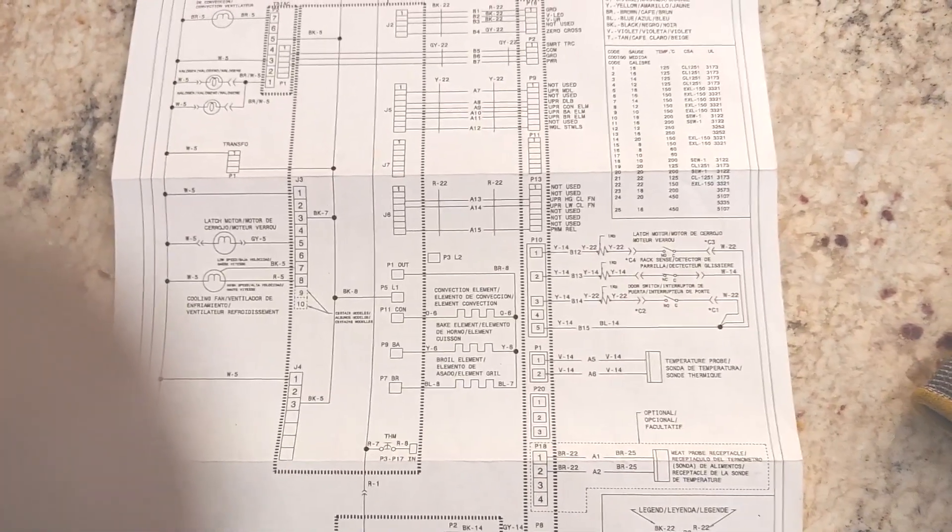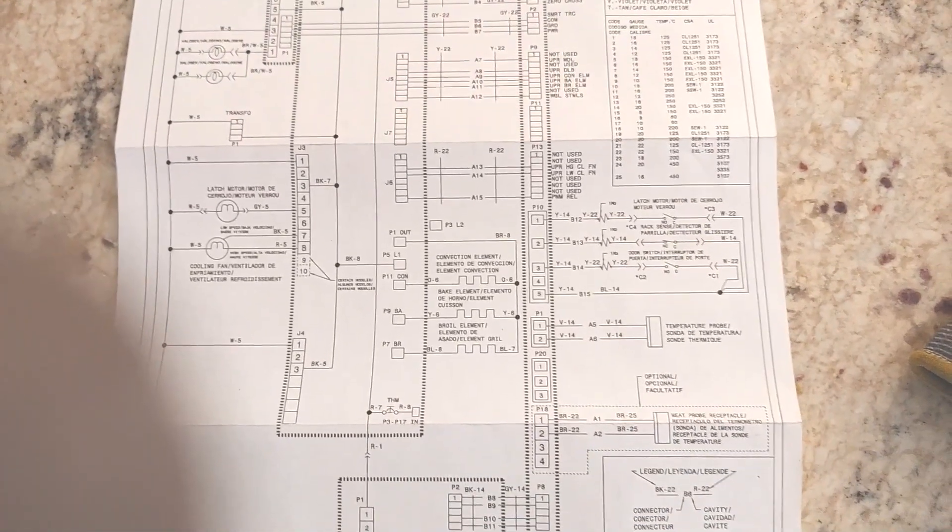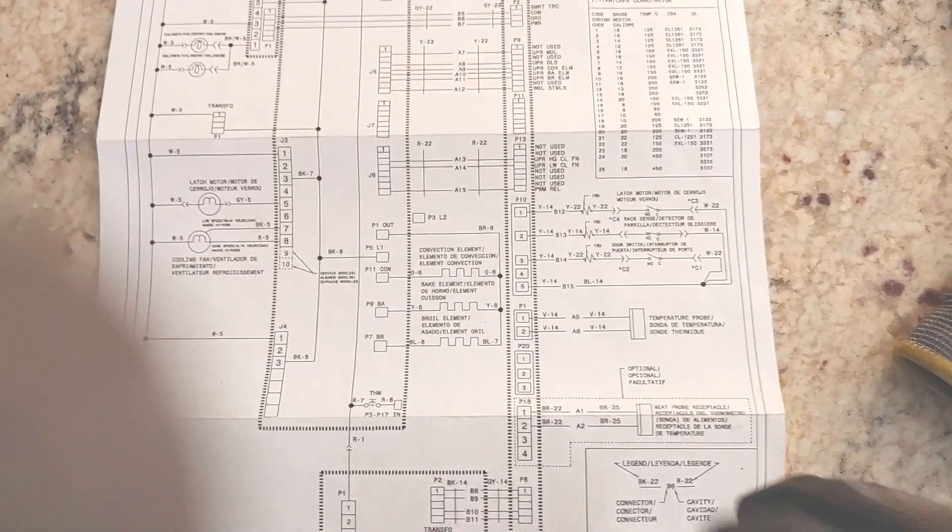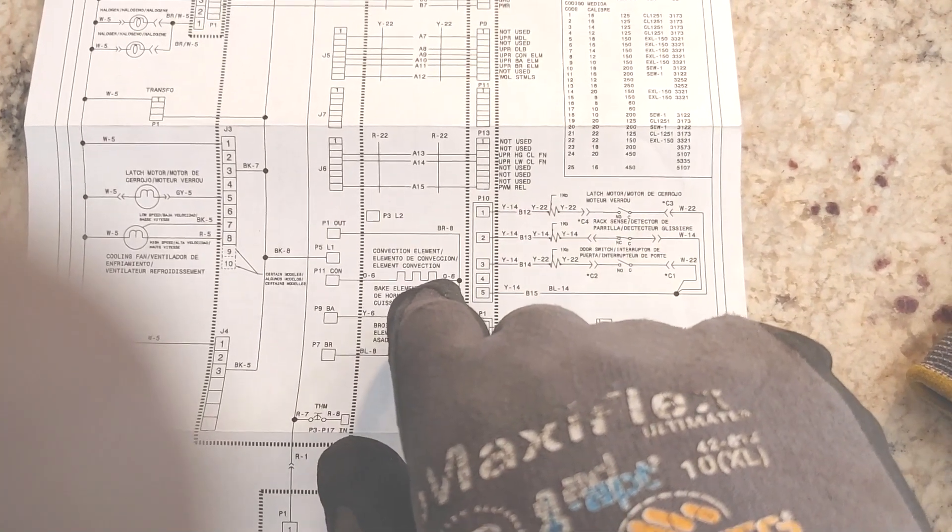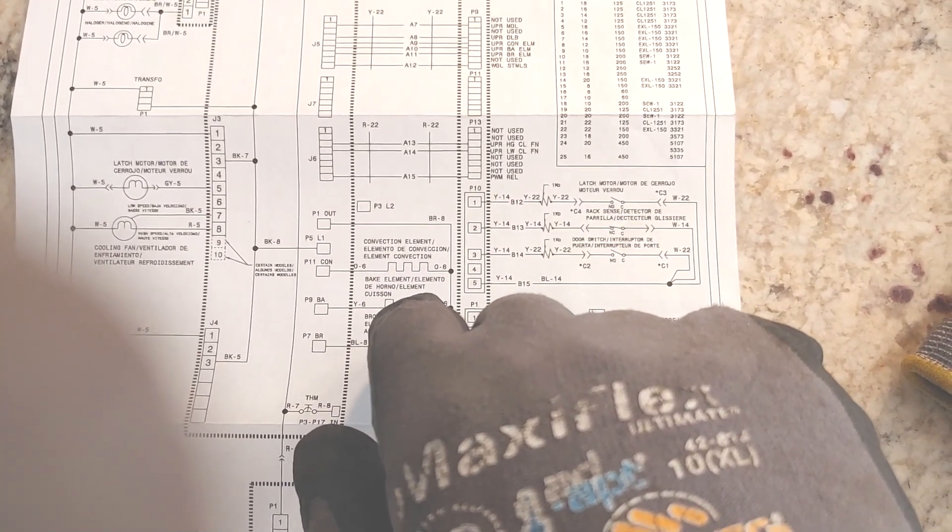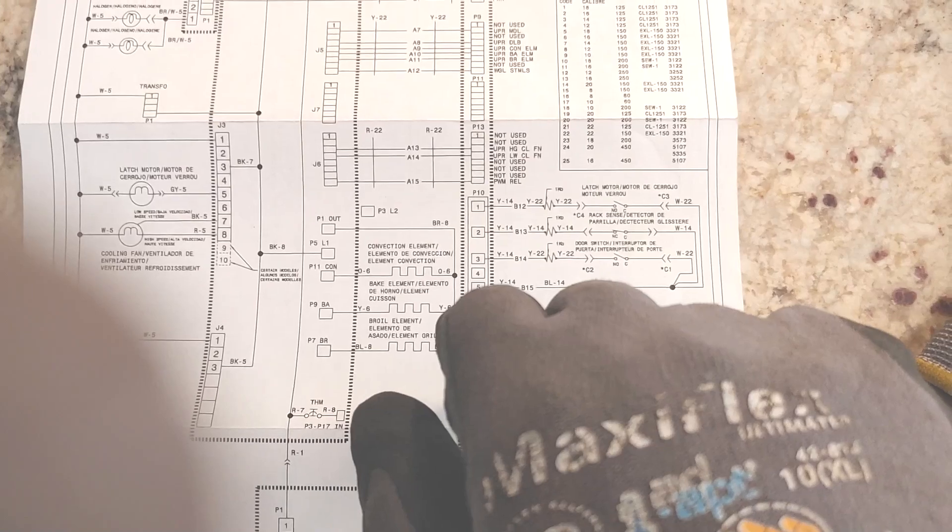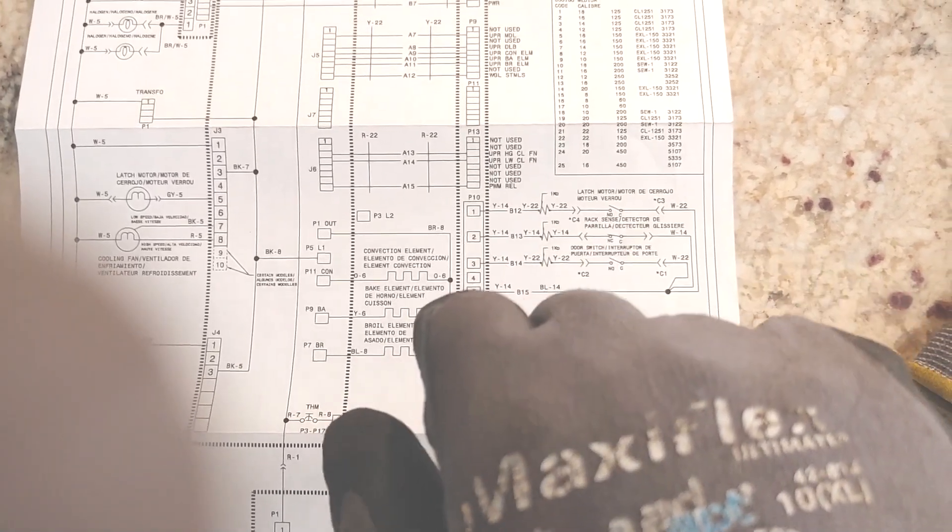They try to use the bake to actually keep the temperature, and the bake element is burned out. We have a yellow wire going to the actual bake, and this brown wire that's feeding the other side of the bake. So we're gonna come over here.